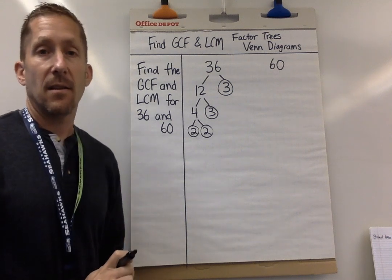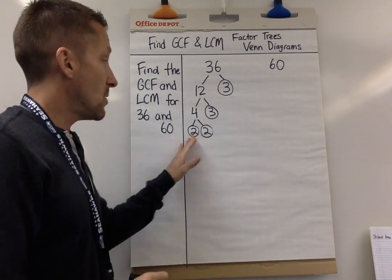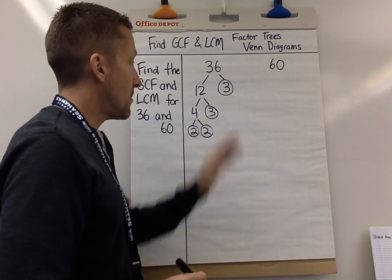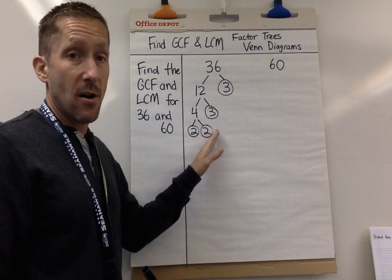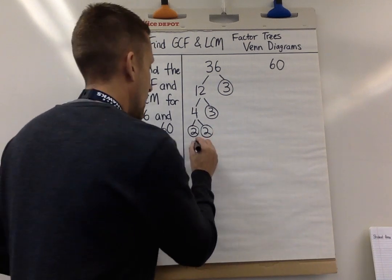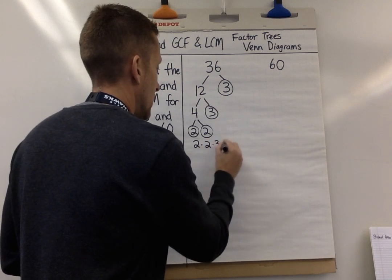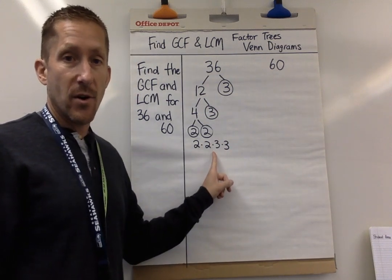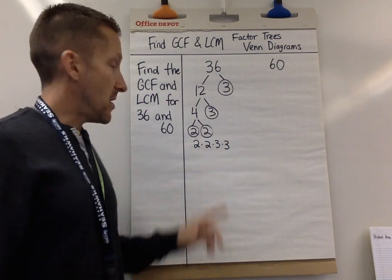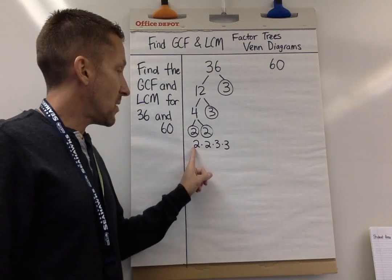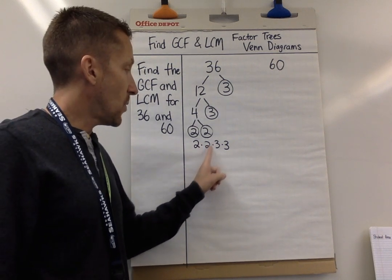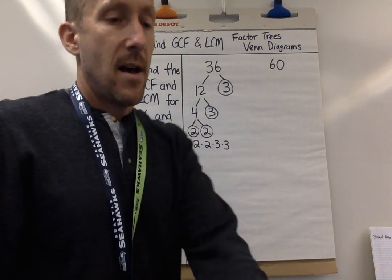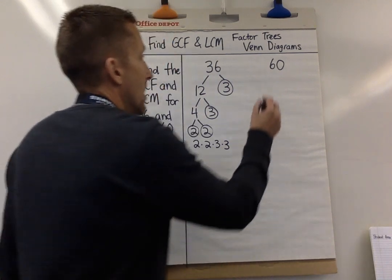That is my factor tree for 36. If you had chosen a different start, like six times six, you would still get these same numbers at the end. Put the circled numbers in order — I write: 2 × 2 × 3 × 3. That's the prime factorization for 36. To check if it's right, multiply the string: 2 × 2 = 4, 4 × 3 = 12, 12 × 3 = 36. It worked!